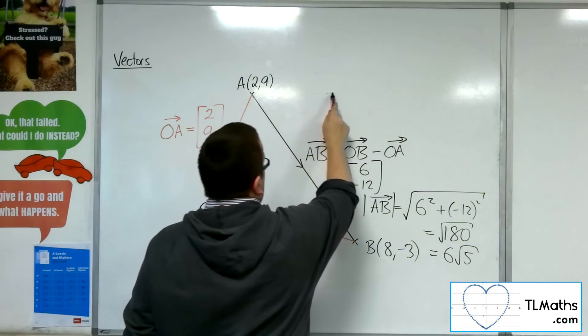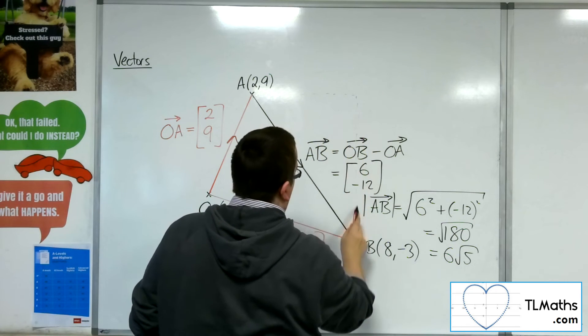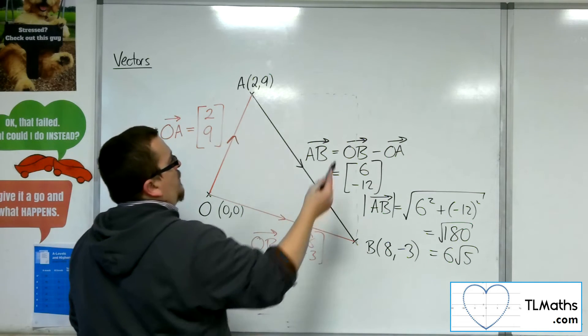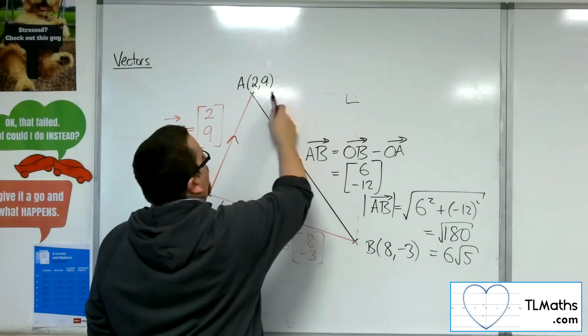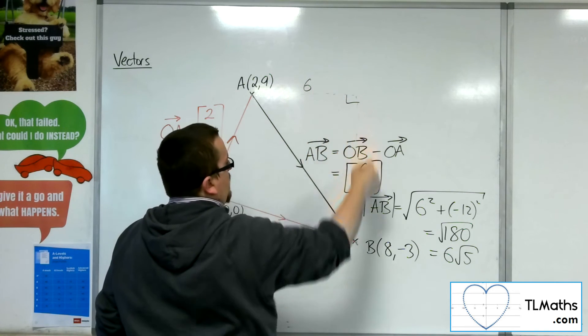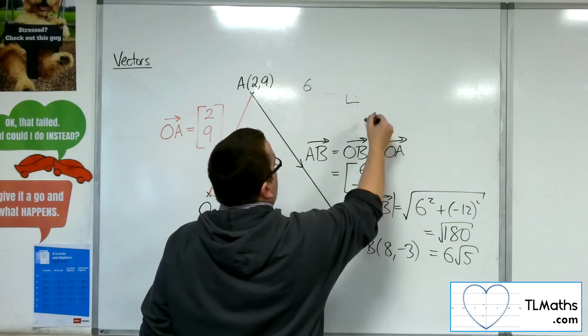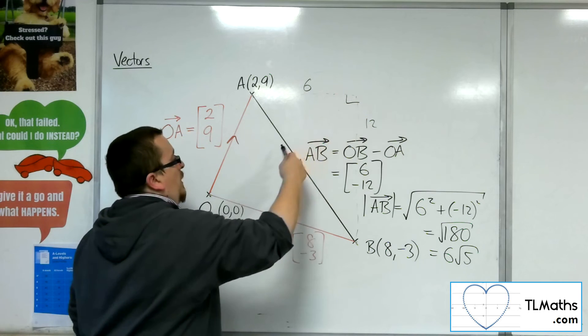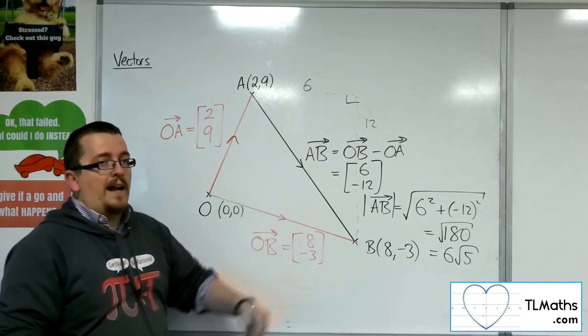And you would effectively be doing the same thing. Find that length. So from 2 to 8 is 6. From 9 to minus 3 is 12. 6 squared plus 12 squared, square rooted.